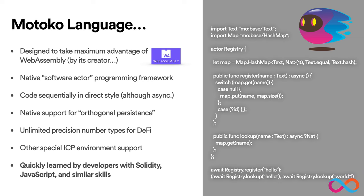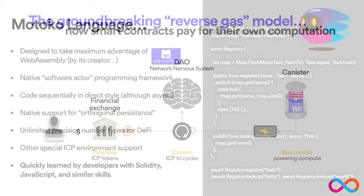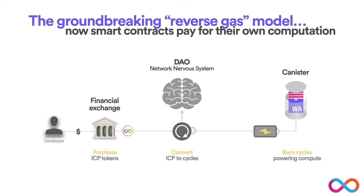Something else you should know about the Internet Computer is that it has a groundbreaking reverse gas model — that means smart contracts now pay for their own computation. In this model, developers get hold of ICP through a financial exchange and convert the ICP to something called Cycles. Cycles are the computational fuel that power canister smart contracts. It's a bit like a Tesla car: you charge it up with electricity, and when it drives around it consumes the electricity and eventually you have to fill it up again. Canister smart contracts work the same way — you charge them up with cycles and it burns through those cycles performing computations and storing data.